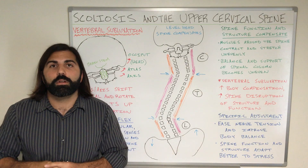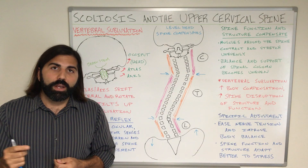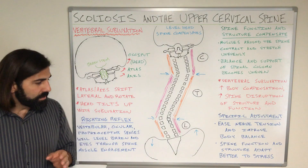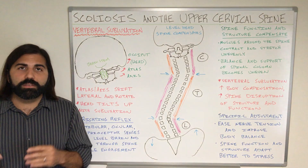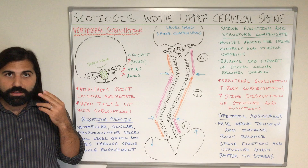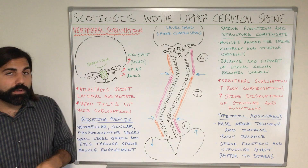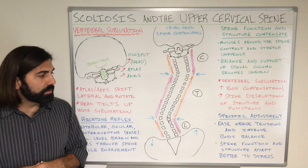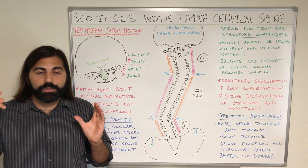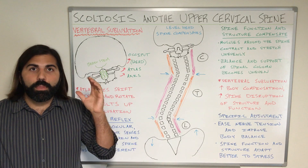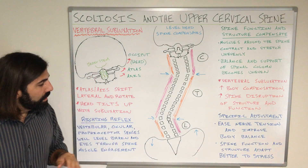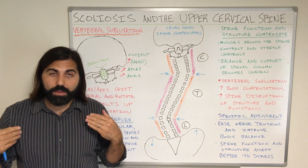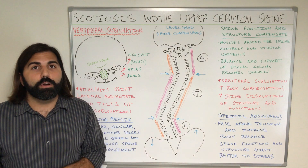Our brain doesn't want to see the world uneven or unbalanced, so in order to level the head the best it can, we have a reflex on our body called a righting reflex. The righting reflex is going to involve three specific sense groups: the vestibular sense found in our inner ear, our ocular sense or eyesight, and the proprioceptor sense — which is found throughout the whole body but has the highest concentration in the upper cervical spine. These three senses talk with the brain in order to tell the brain and brainstem the best way to help level the eyes.